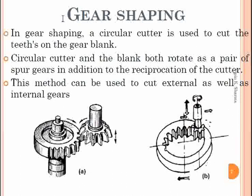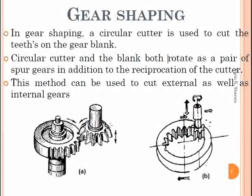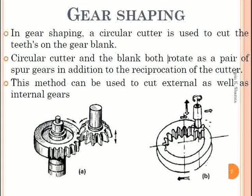The next method is the gear shaping process. In gear shaping, a circular cutter is used to cut the teeth on the gear blank. The circular cutter and the blank both rotate as a pair of spur gears, in addition to the reciprocation of the cutter. This method can be used to cut external as well as internal gears. The cutter has sharp teeth on its periphery, and as it reciprocates at higher velocities, tooth profiles are cut on the gear surface.